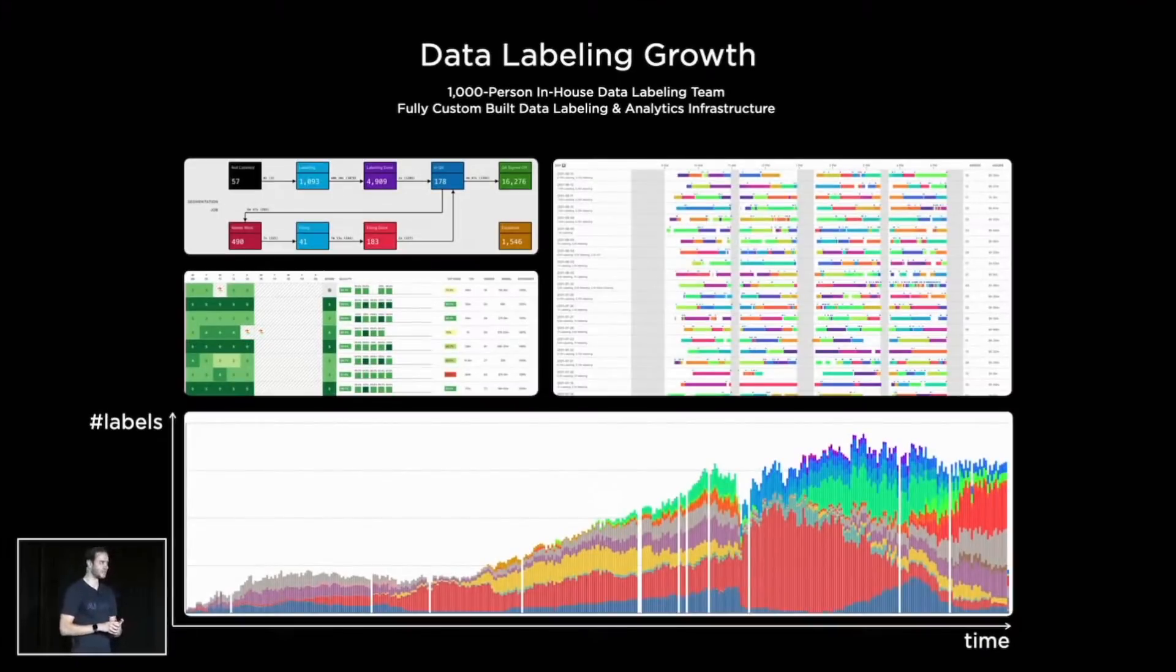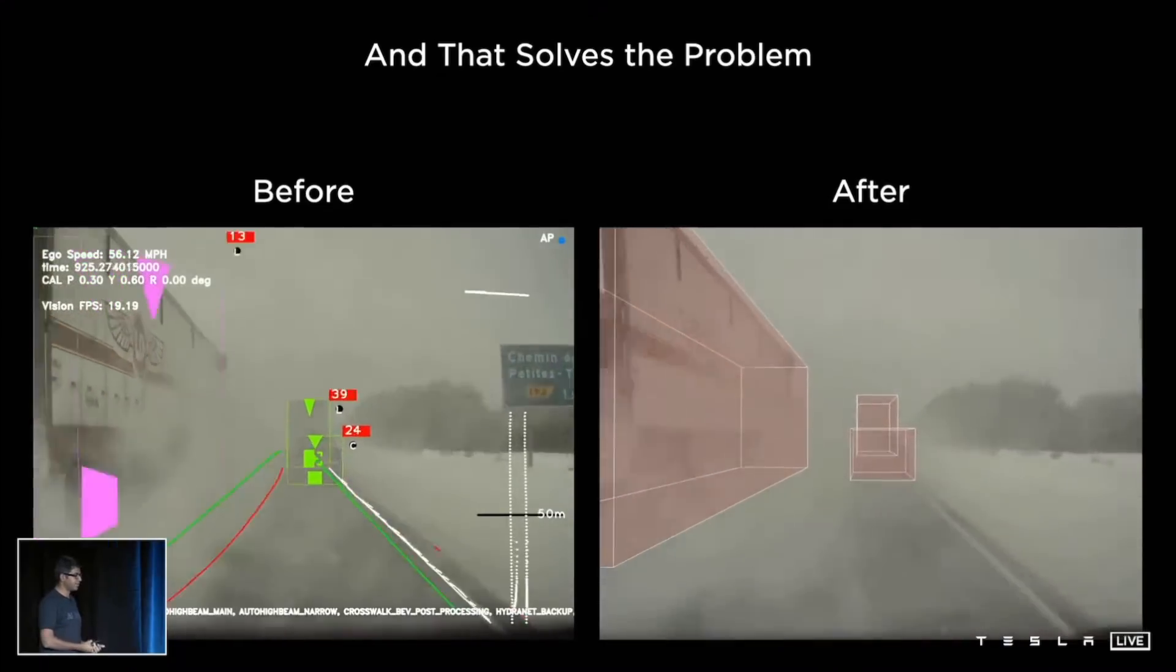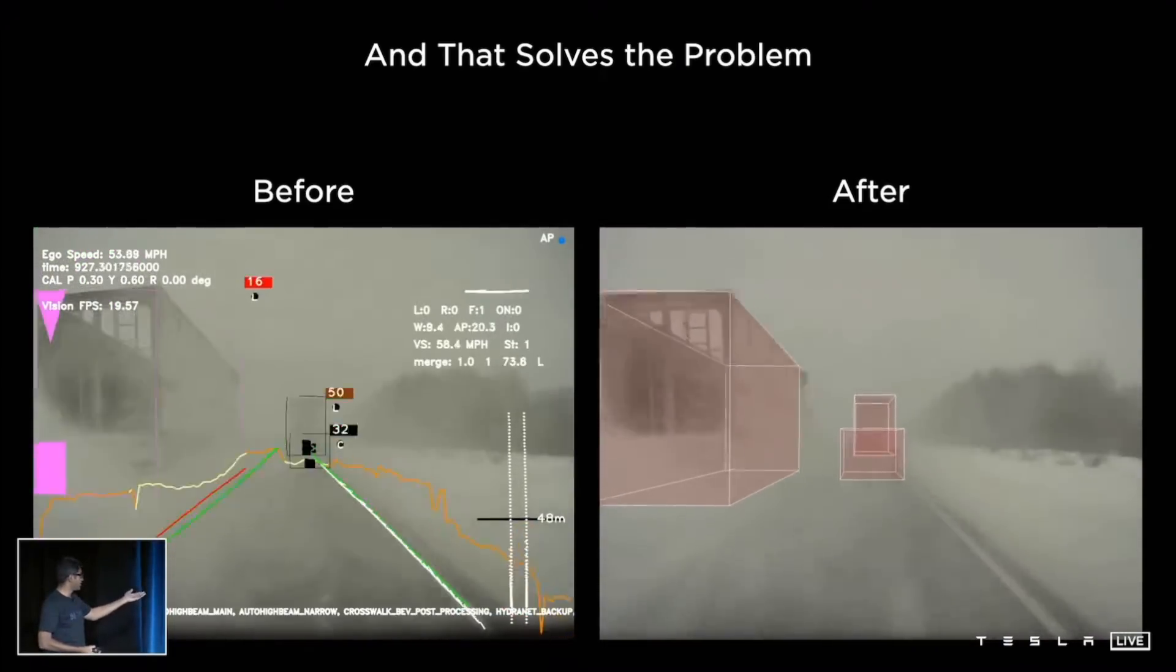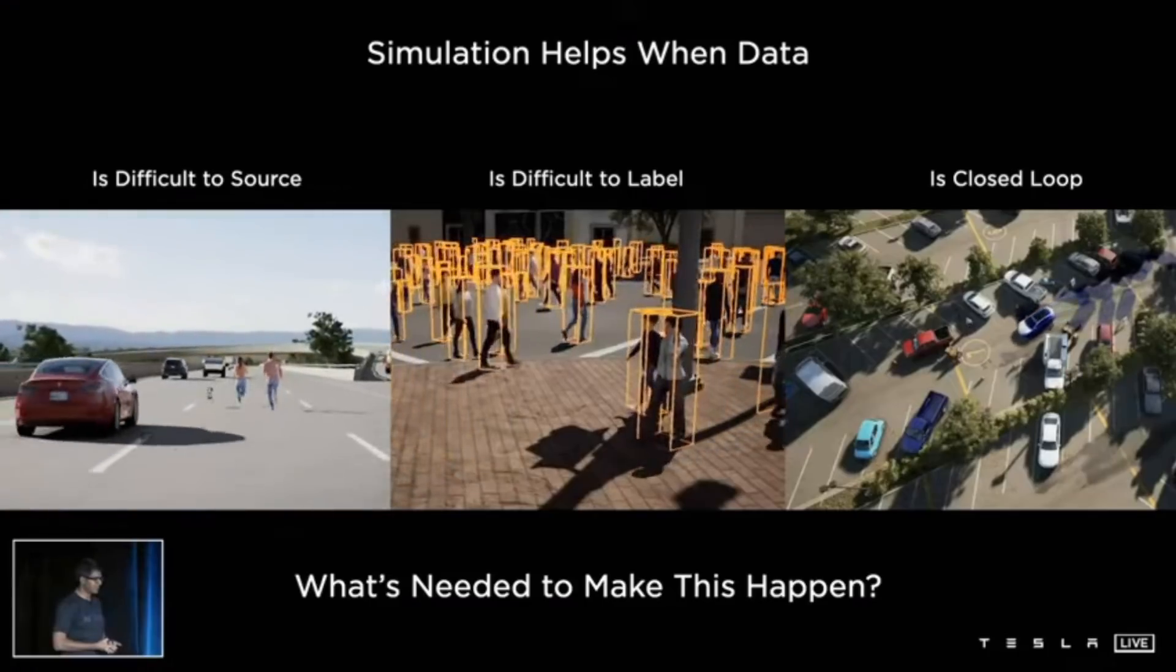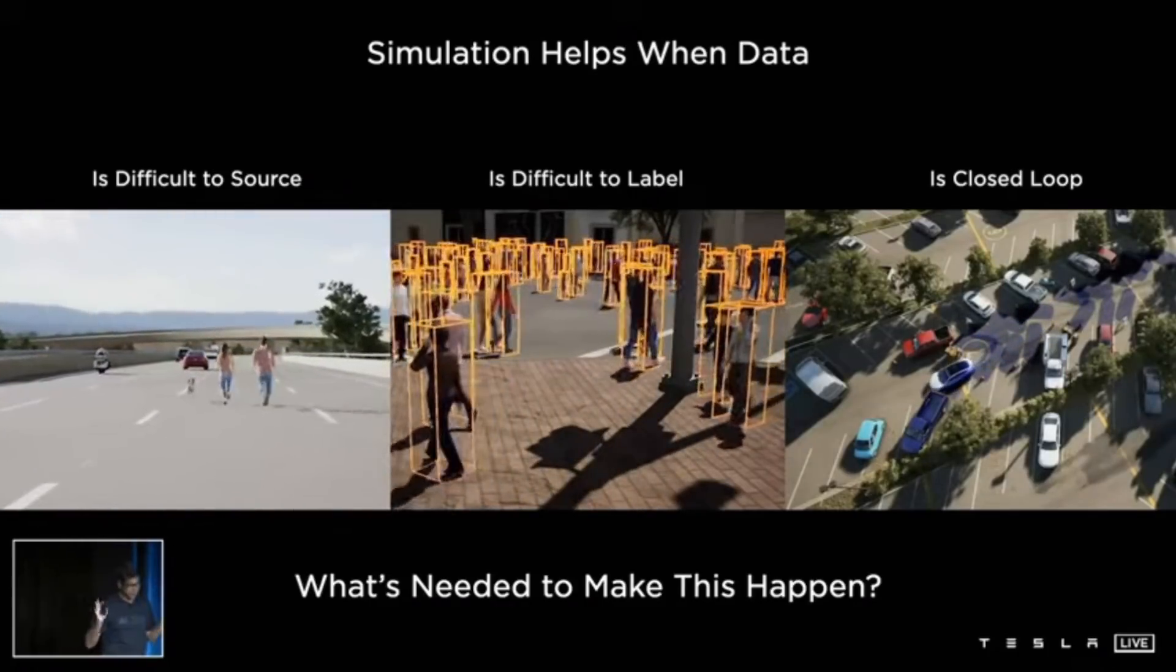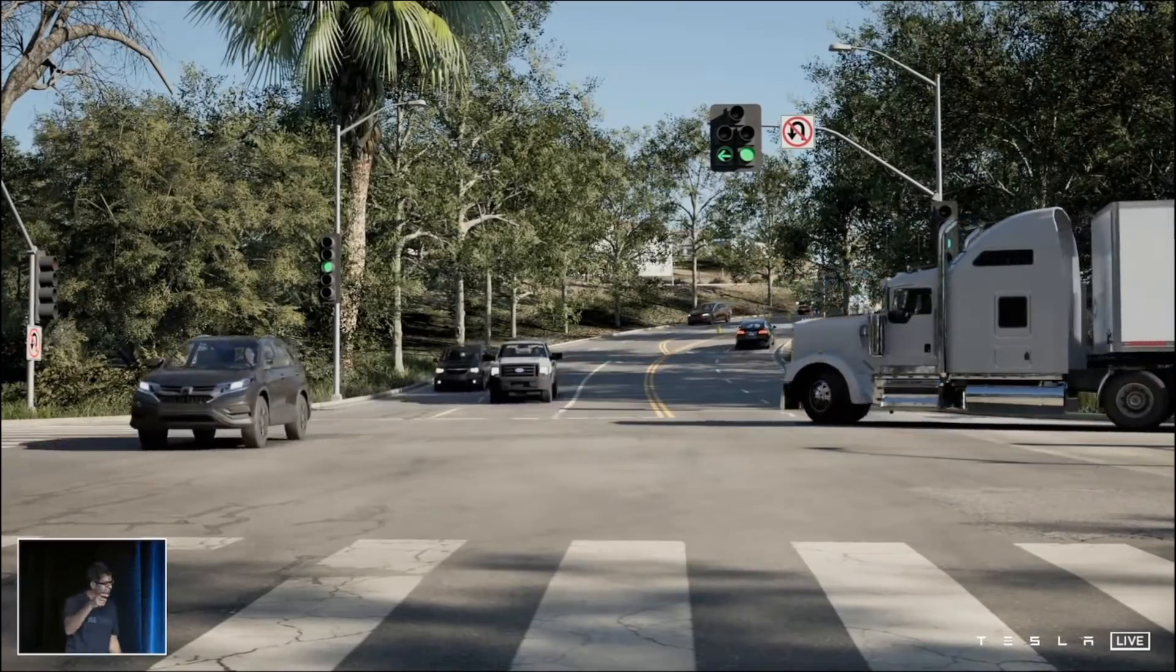Tesla now has a 1,000-person in-house data labeling team. But they also showed how they are using their simulations to help when data is difficult to source, like extreme edge cases of a family with a dog running on the highway. And they have some cool-looking simulations that look very real.